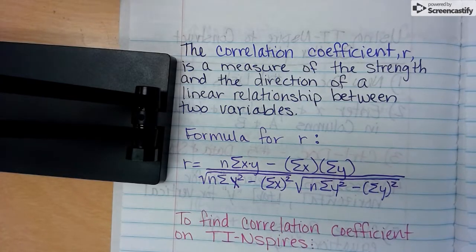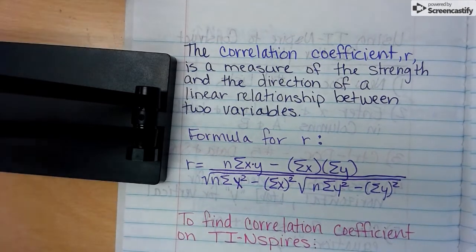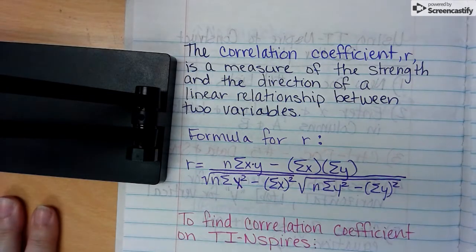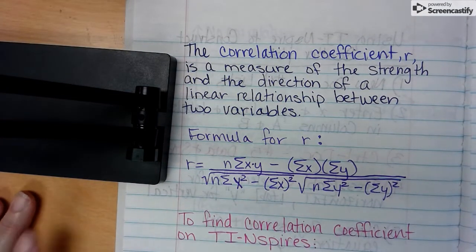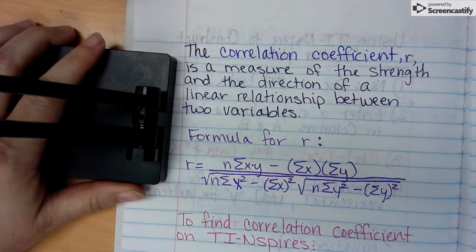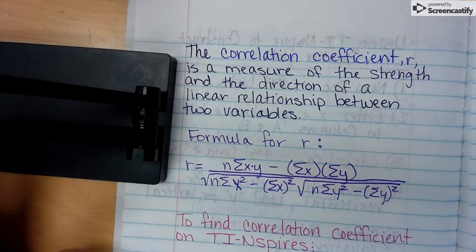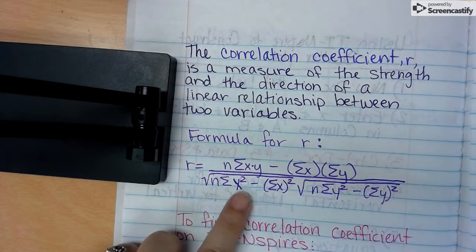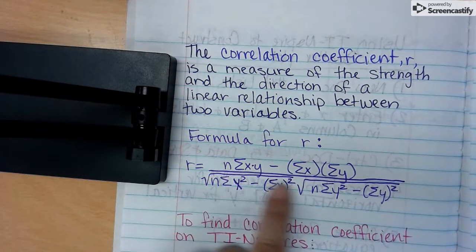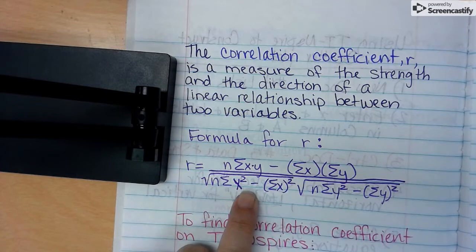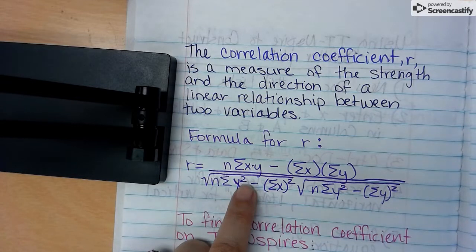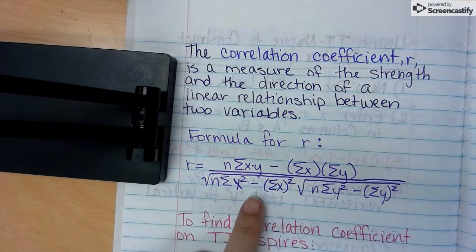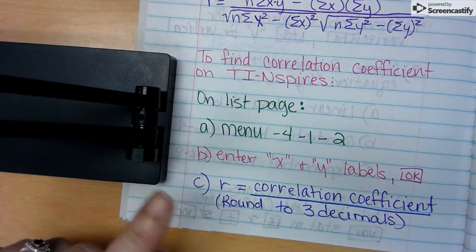When you find the correlation, there is a numeric value that we use and it makes it easier to determine the type of correlation. It's called the correlation coefficient and is the measure of the strength and direction of the linear regression representation between two variables. It works for linear but not for quadratic or exponential. There is a really nasty looking formula here - we are not going to work through this formula. The great thing about these calculators is they do all the work for us, so we can use a menu option to find what r is.